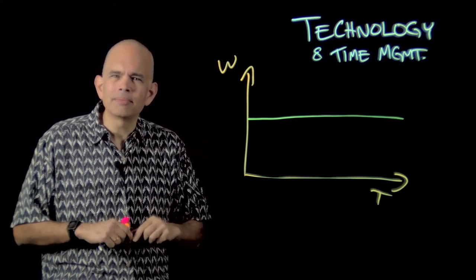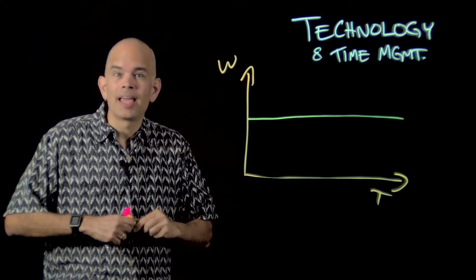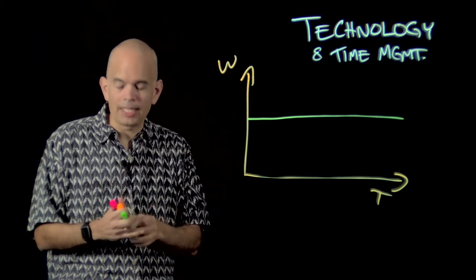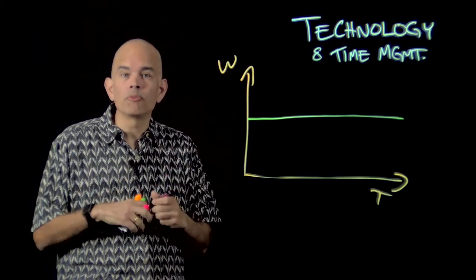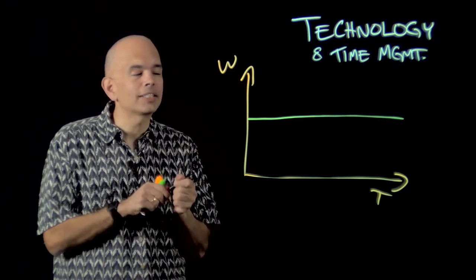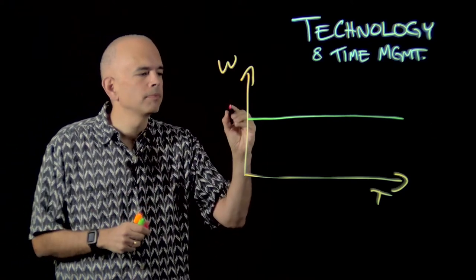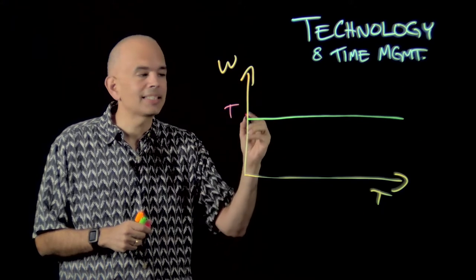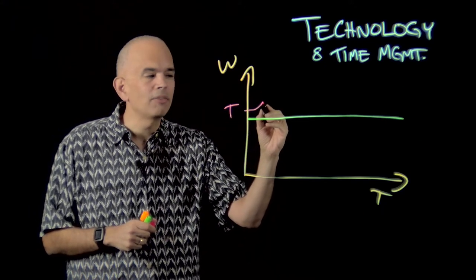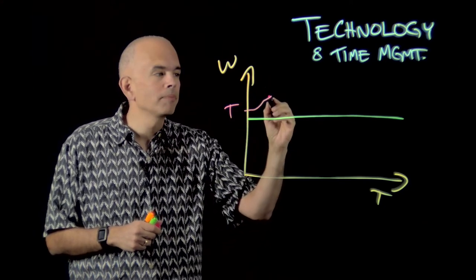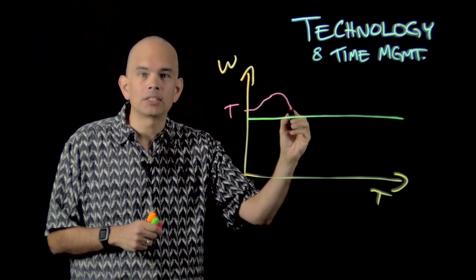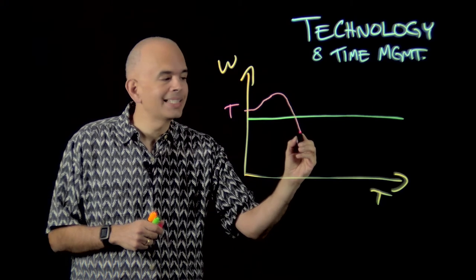But then some technological thing comes along and allows us to do something a little bit differently and a little bit more efficiently. What you'll find is as you become more familiar with technology, although the use of that technology initially makes a task take more work and even more work, at some point you achieve the contempt of the familiar and the amount of work that it takes to do the same task decreases.